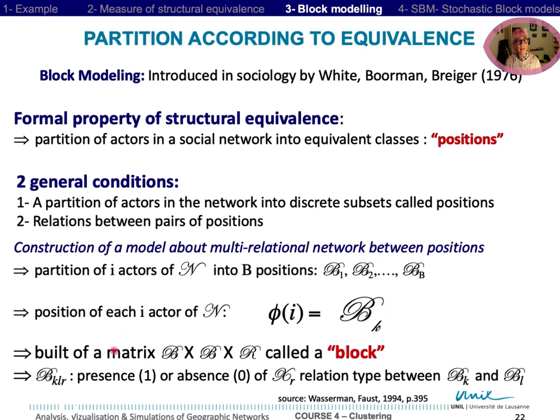And the build of a matrix B by a product of B and R are called a block. Then BKLR is presence or absence for the X matrix that are the relation between the different blocks.